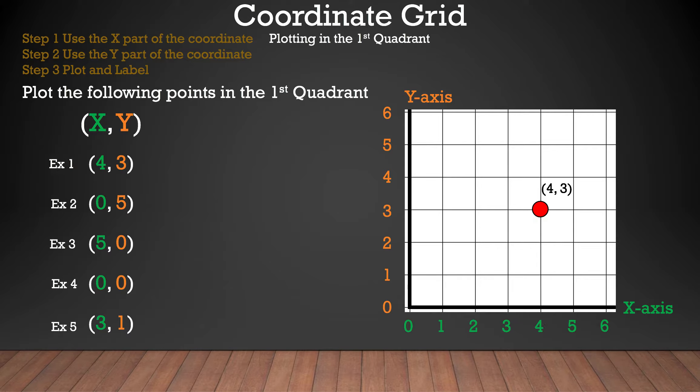Now let's take a look at example two. We're going to move zero spaces for the X part because that's the first number. And now we're going to move five spaces up because that is the Y part of the number. Now we plot and label, and we're done with that example.